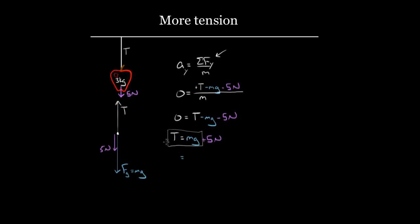With numbers: the mass is three kilograms times 10 meters per second squared — rounding 9.8 to 10 to keep things clean — that's 30 Newtons, plus five Newtons equals 35 Newtons. So the tension is mg when the object is just hanging, but if there are extra forces, it won't be mg. In this case, with a five Newton force downward, it's 35 Newtons.